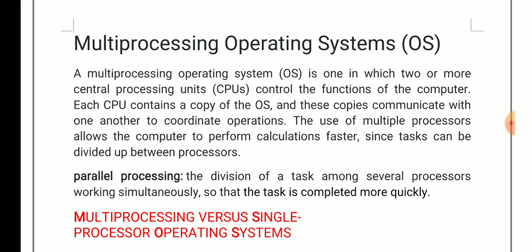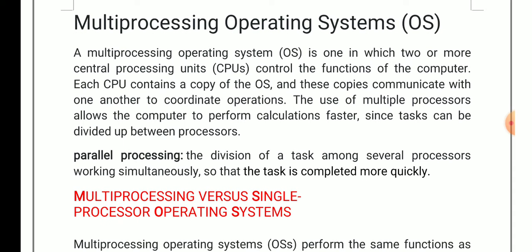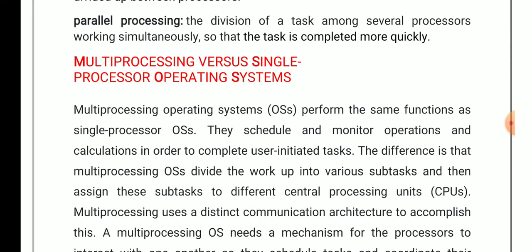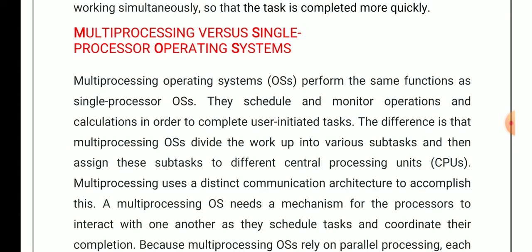In multi-processing operating systems, we take the help of a concept called parallel processing. Parallel processing is basically the division of tasks among several processors so that they can perform their work simultaneously. So whenever we are dividing our task into subtasks to perform processing quickly, we are using parallel processing.